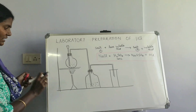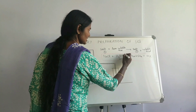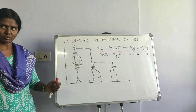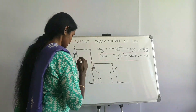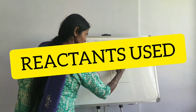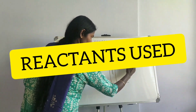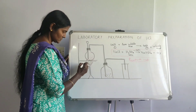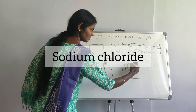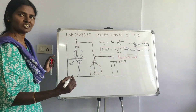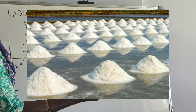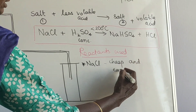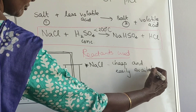This reaction involves heat at a temperature less than 200 degrees Celsius. The first reactant used is sodium chloride. Why is it preferred? Because its origin is seawater, which is found everywhere, making it very cheap and easily available. That is why sodium chloride is preferred.